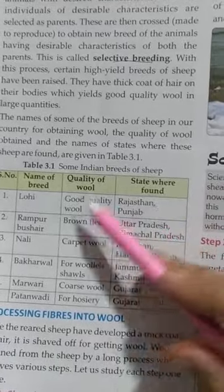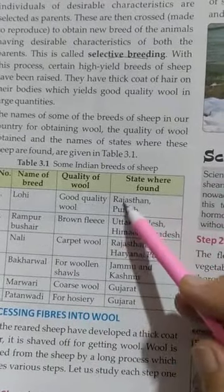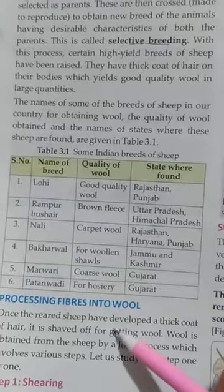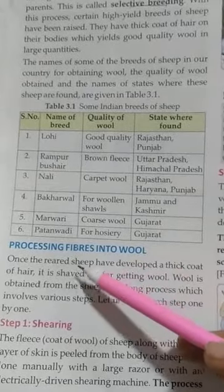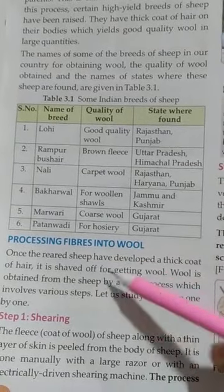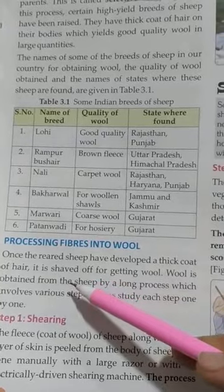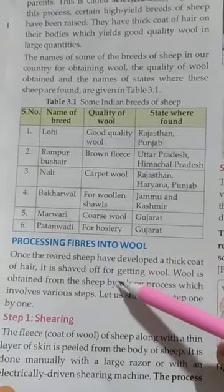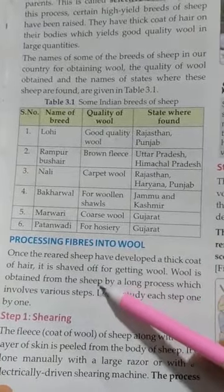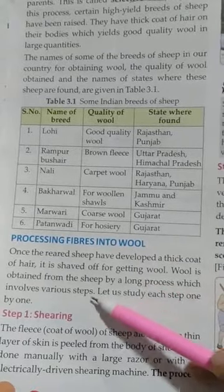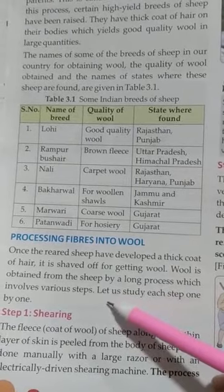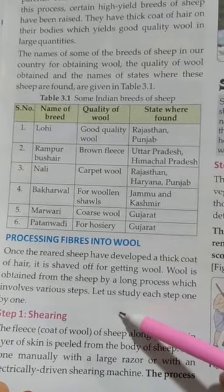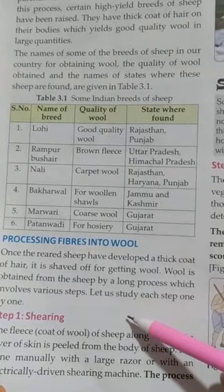Now next - processing fiber into wool. How can we convert fiber into wool? Once the reared sheep have developed a thick coat of hair, it is shaved for getting wool. Wool is obtained from sheep by a long process which involves various steps. Let us study each step one by one.